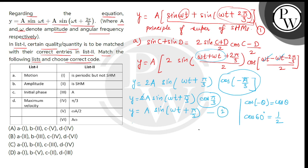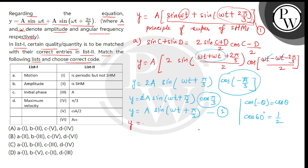अब यहां देख सकते हैं, इसको standard equation of SHM से compare करेंगे — y is equal to a sin of omega t plus phi। बच्चों यहां देख सकते हैं कि यह equation SHM with amplitude a represent करता है। Amplitude है a, और जो initial phase है उसकी value है pi by 3। तो a entry में जो motion का answer है — that is SHM — तो यह आएगा entry number 2.